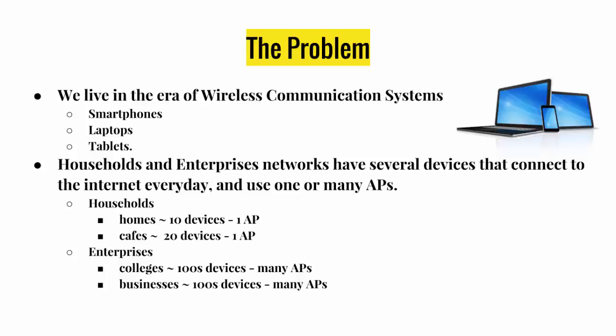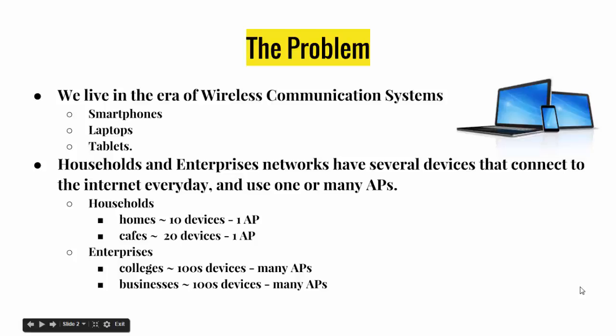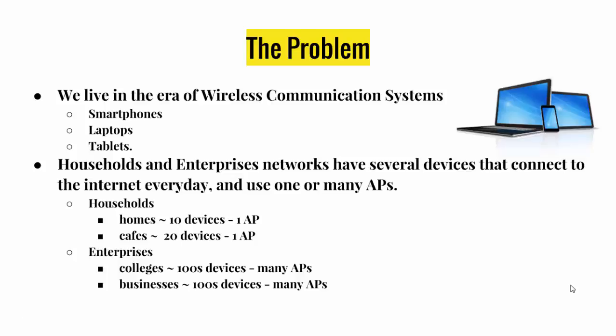Let's first introduce the problem. We live in the era of wireless communication systems, which means we have smartphones, laptops, tablets, and any other device that connects to the internet. Households and enterprise networks have several devices and use one or many APs — access points. A home typically has about 10 devices and one AP, while cafes have about 20 devices with one AP. Enterprise networks, including colleges and businesses, include hundreds of devices with many APs.